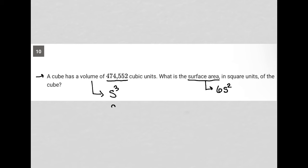So what I'm going to do is I'm going to solve for S. I'm going to say, well, if I know that S cubed is equal to 474,552, then when I cube root both sides here, I should be able to figure out the value of just the length of a side.